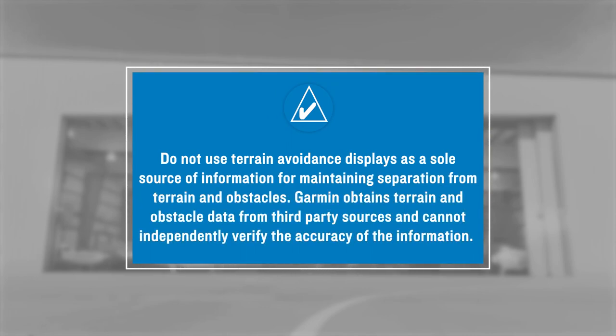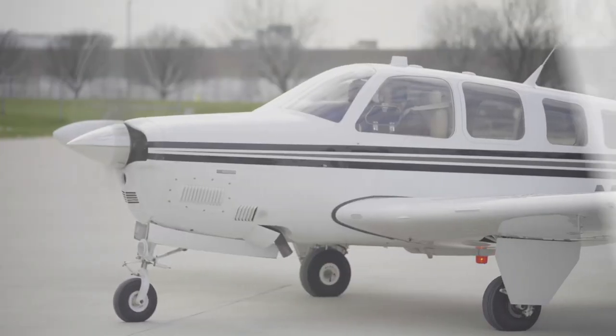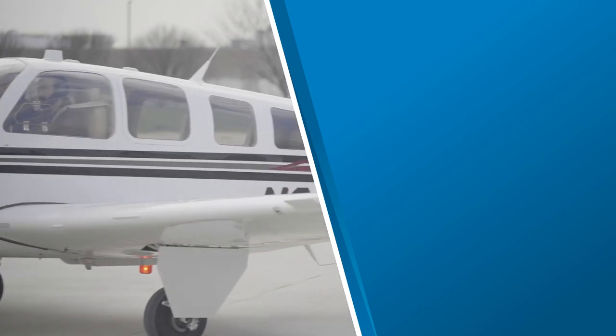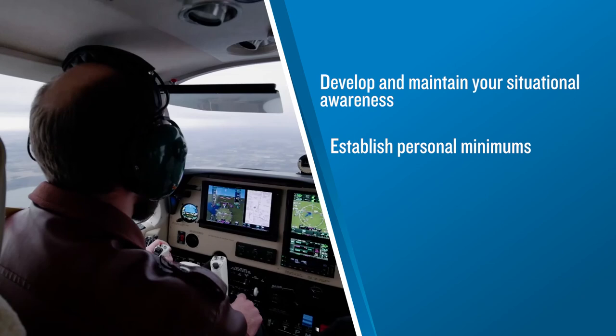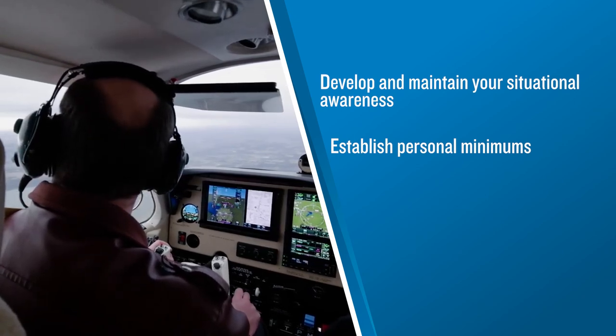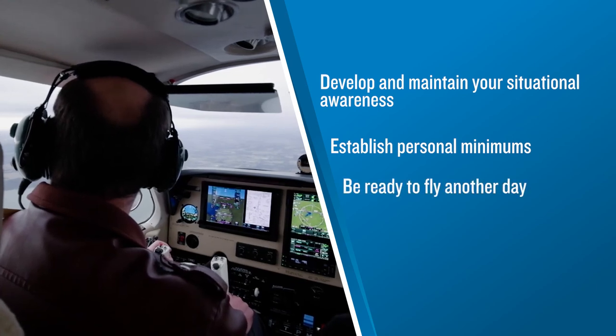Garmin systems provide easy-to-interpret terrain and obstacle awareness and alerting features that have the potential to significantly contribute to your situational awareness. But you should keep in mind that these systems are dependent upon databases that may not contain all obstacles. You still need to maintain a visual scan for terrain and obstacles, and develop your situational awareness starting with pre-flight planning, and establish your personal minimums for ceilings and visibility. If the weather doesn't meet your standards, then the best option is to fly on another day. That wraps up our discussion of ways to reduce the risk of CFIT. Be sure to check out additional information on this subject in the documents linked in the description, and we encourage you to continue your safety journey by viewing the other videos in the Garmin Aviation Risk Management series.